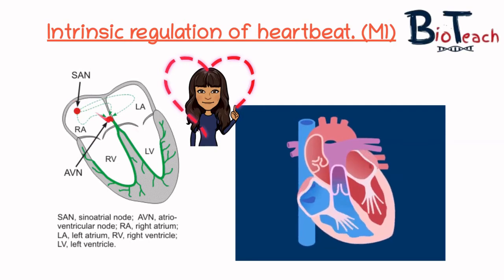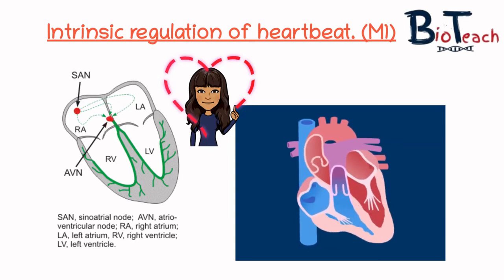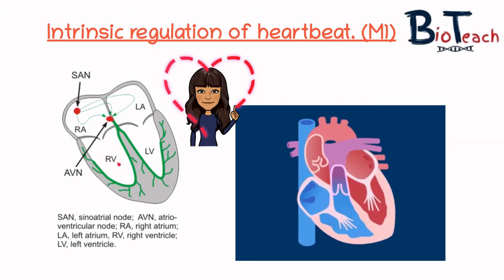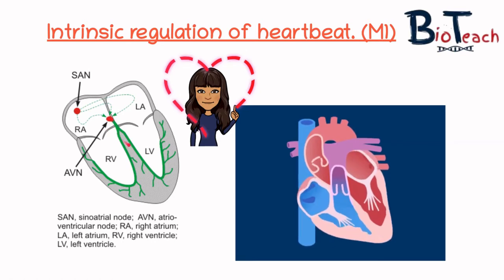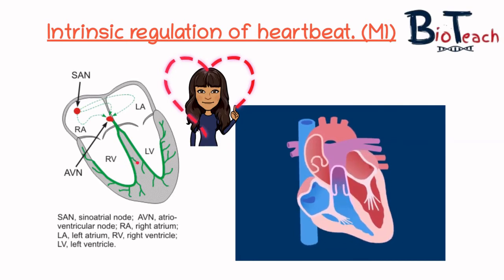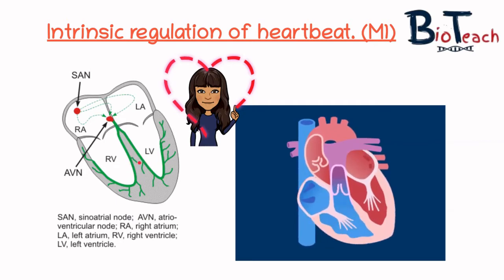The impulses then reach the AV node, but there is a slight delay before it fires. This delay is necessary to allow the ventricles to completely fill — the atria must completely empty before the ventricles can contract. The AV node then sends an electrical impulse down the centre, or septum, of the heart. In the septum there are two bundle branches — the right bundle branch and the left bundle branch — together known as the bundle of His, with a capital H.